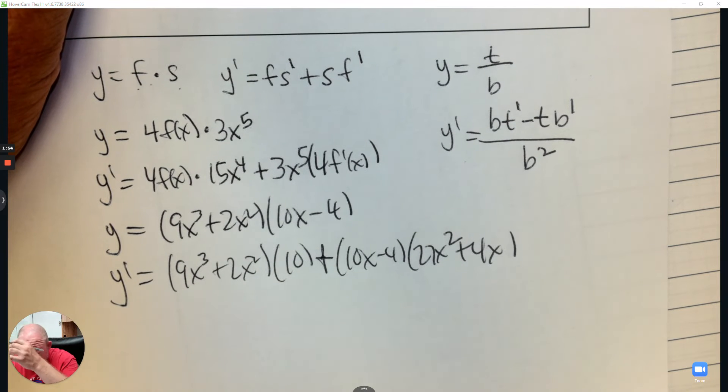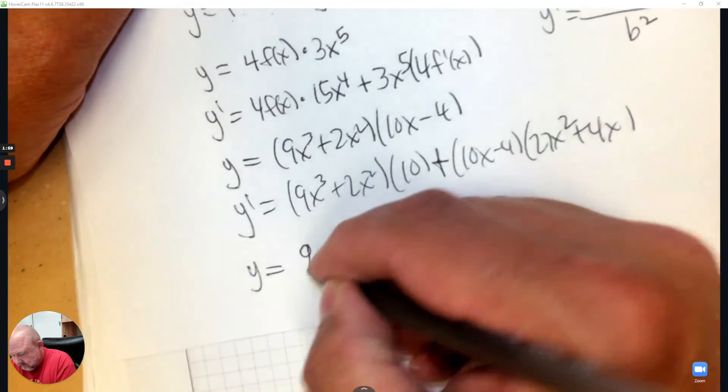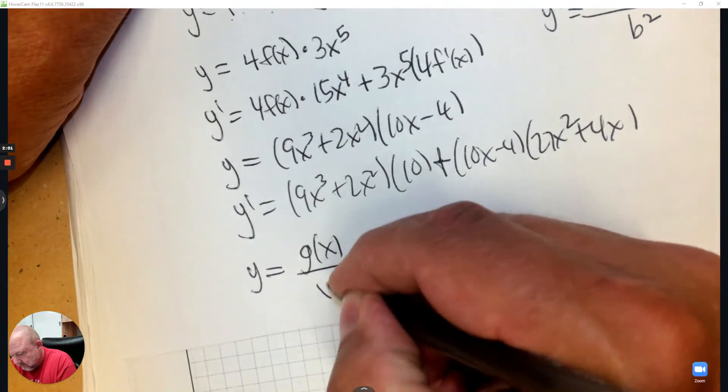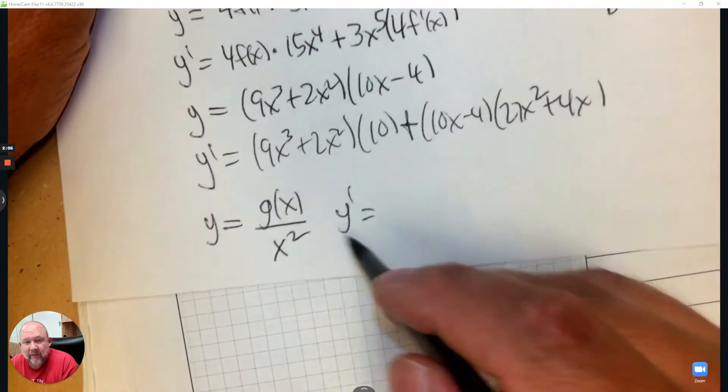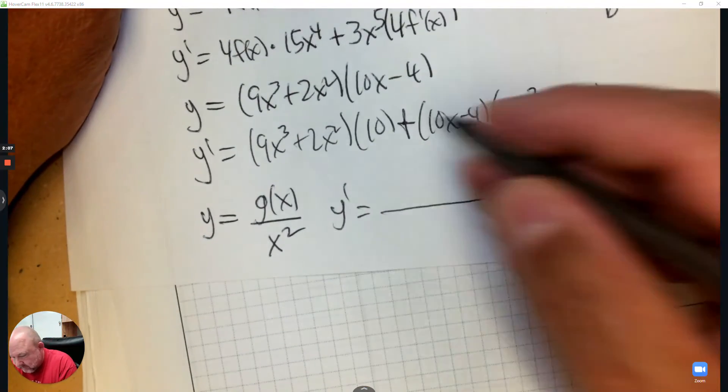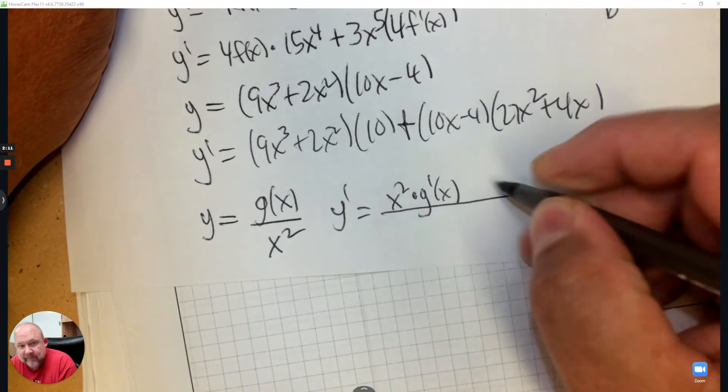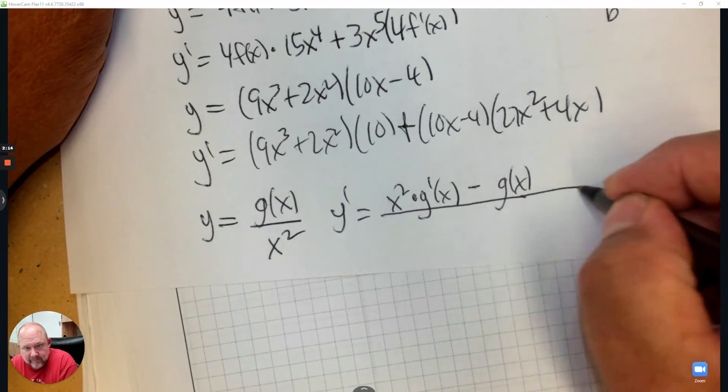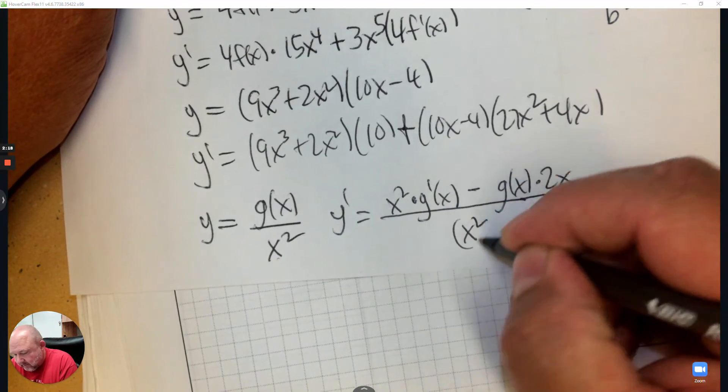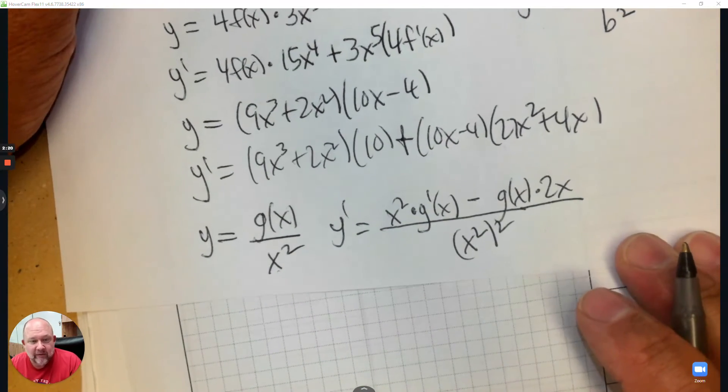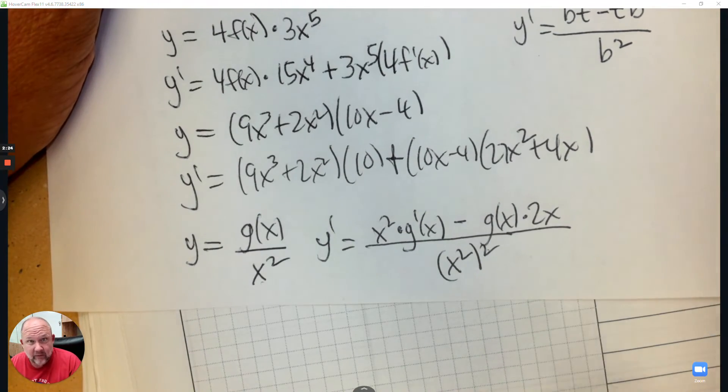Now what does that look like? So if I look at it generically, how would I write this generically? So that's the bottom times the derivative of the top minus the top times the derivative of the bottom, and then you square the bottom. So you could write x to the fourth, or just write x squared with parentheses and square it. All right. I'm going to do one more example.